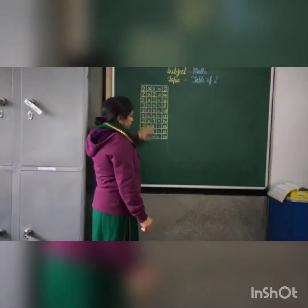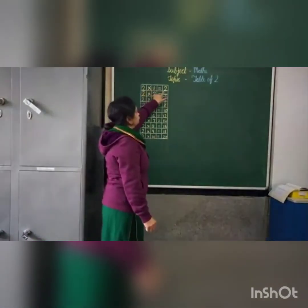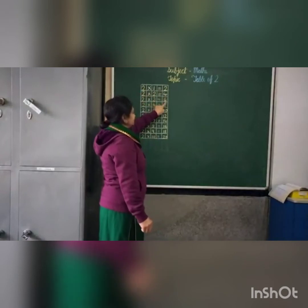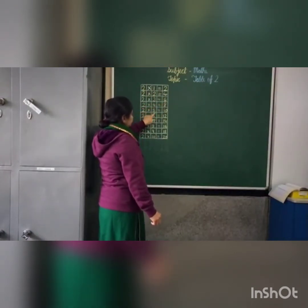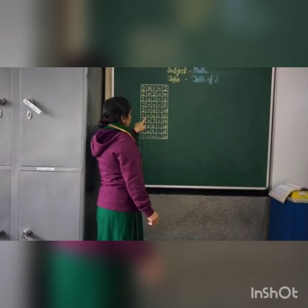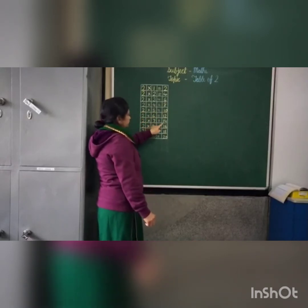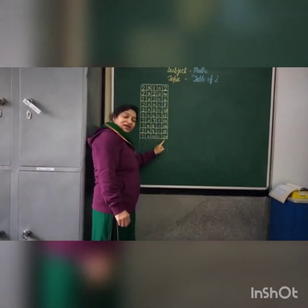Now, let's revise the table with ma'am. When you speak: two ones are two, two twos are four, two threes are six, two fours are eight, two fives are ten, two sixes are twelve, two sevens are fourteen, two eights are sixteen, two nines are eighteen, two tens are twenty.